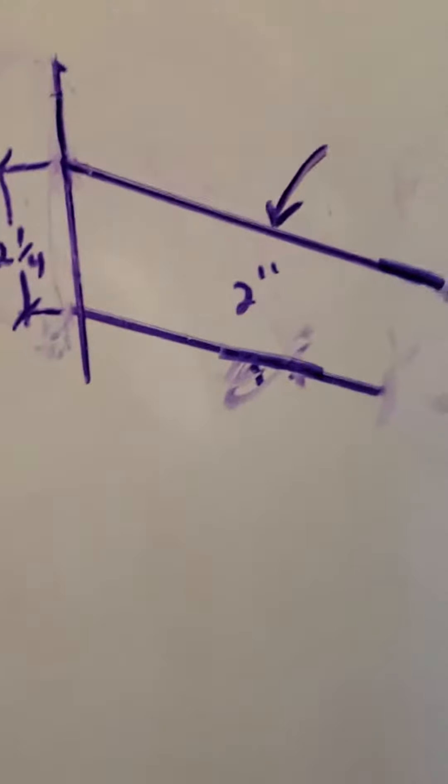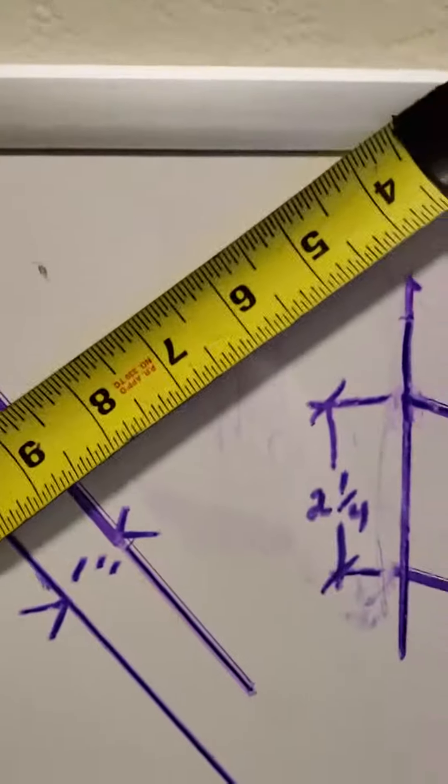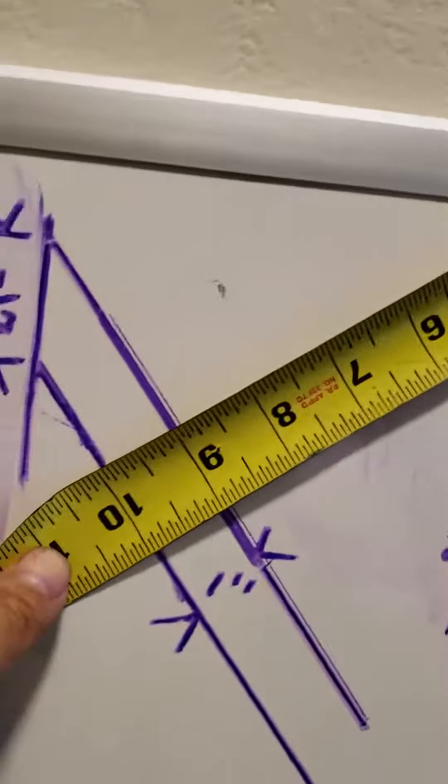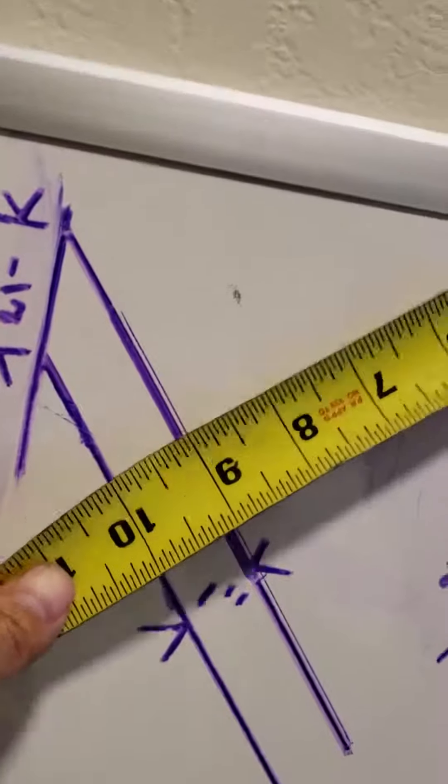Or an extra quarter inch is essentially what it comes up being. Now, if you have a really sharp angle, likewise, that's going to change your framing number. So you can't just go a 1-inch offset and call it good.